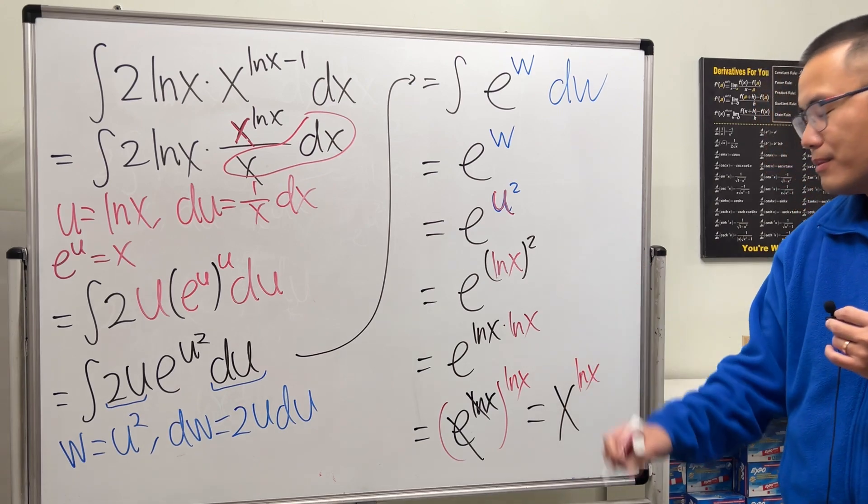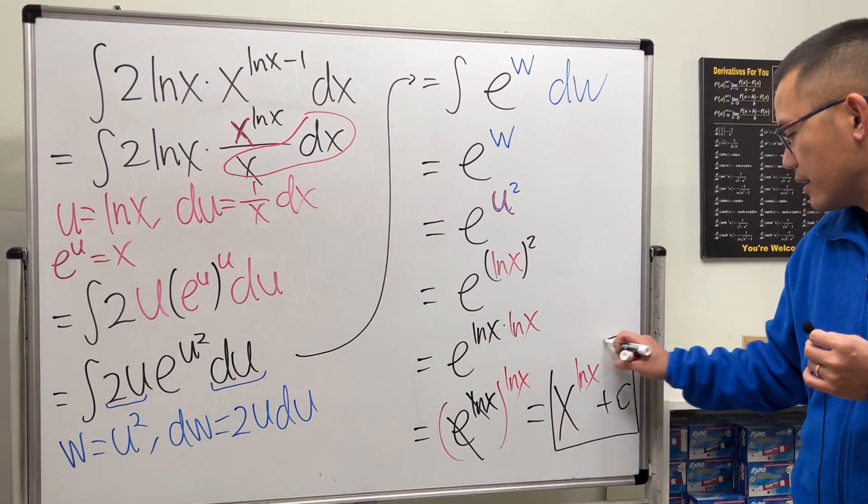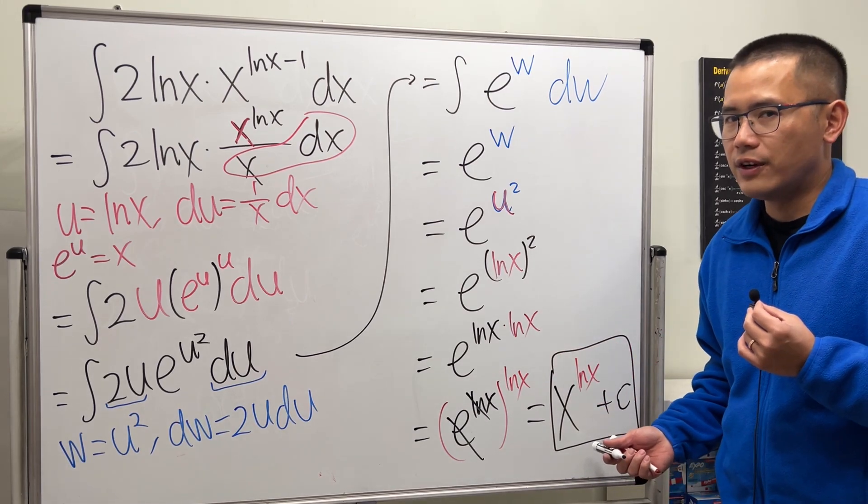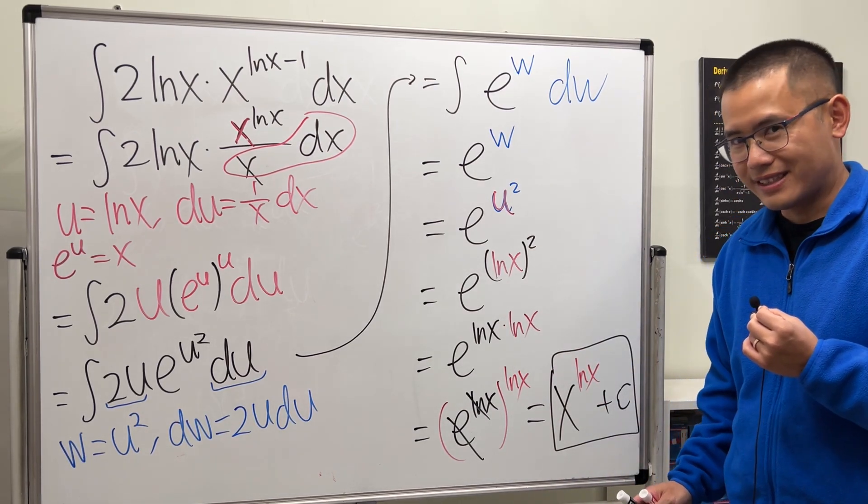And of course, don't forget the plus C. Usually you can just put on the plus C at the very end because we're just trying to do an independent integral. So that'll be it, that's it.